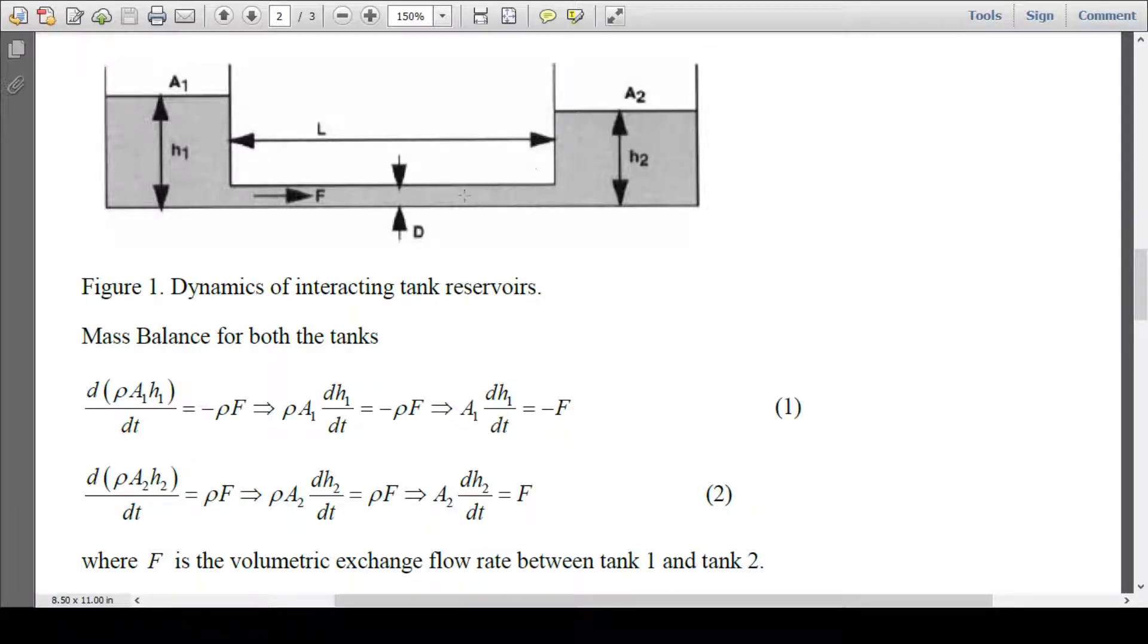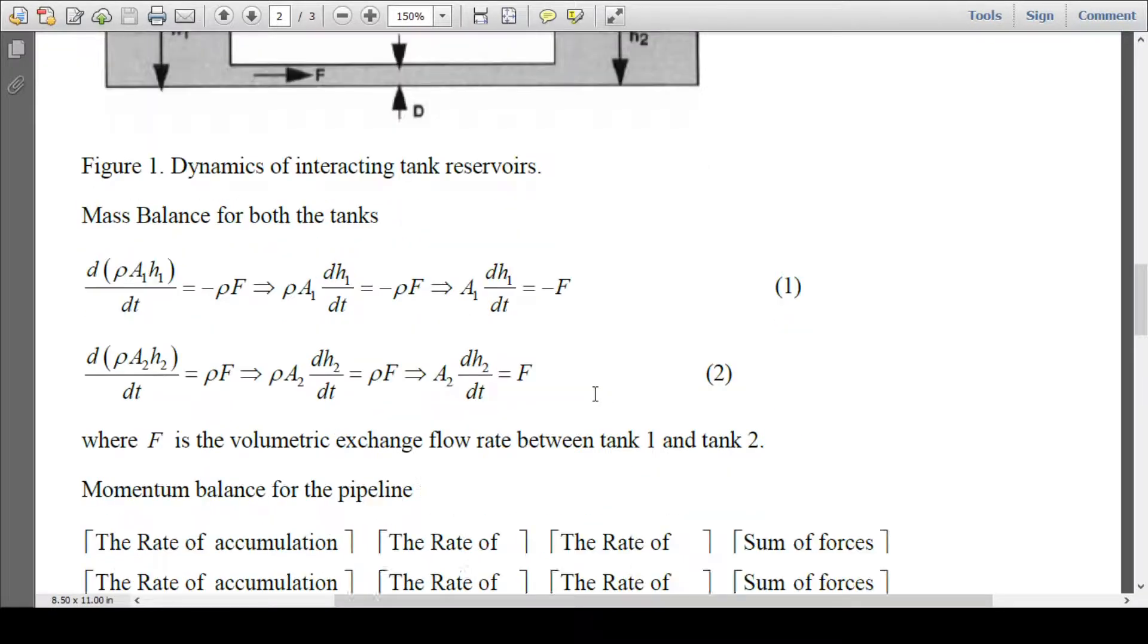Same thing, because whatever mass will come out from tank 1, the same mass will enter into tank 2. For tank 2, the accumulation term would be equal to rho f, and we can write A2 dH2/dt equals f. Now f is the volumetric exchange flow rate between tank 1 and tank 2.